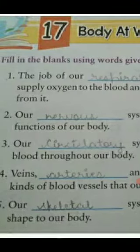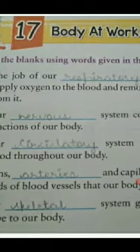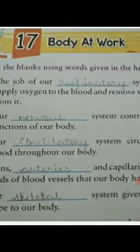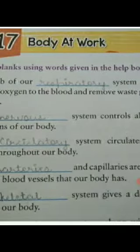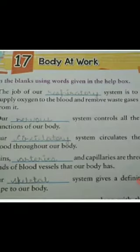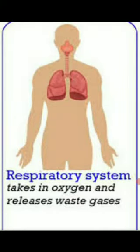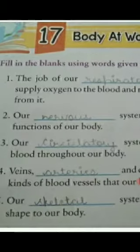First one: the job of our DASH system is to supply oxygen to the blood and remove waste gases from it. So what is this system? This is the respiratory system. Here you can see the human organ system — this system takes in oxygen and releases waste gases. So you have to fill here: respiratory system.